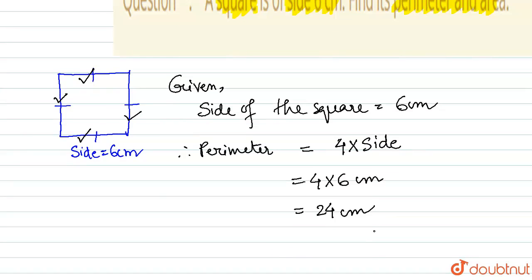Now they are asking to find the area. The area of any figure means the portion, the shaded portion bounded by the closed figure. So this is the area of the shaded portion which I am showing here is the area of the square.